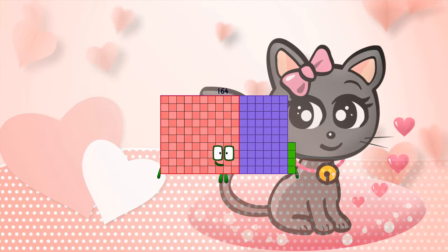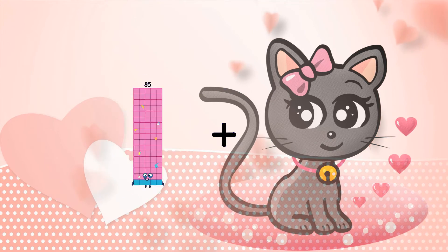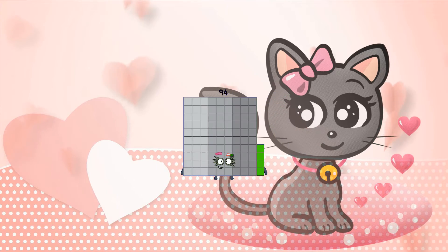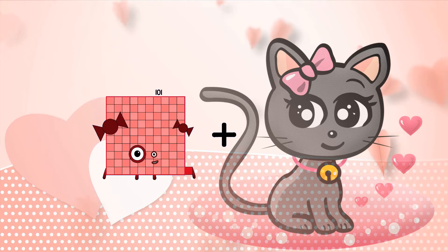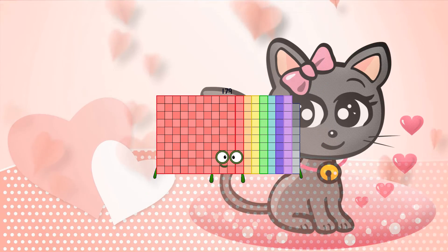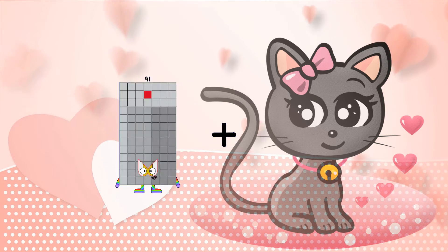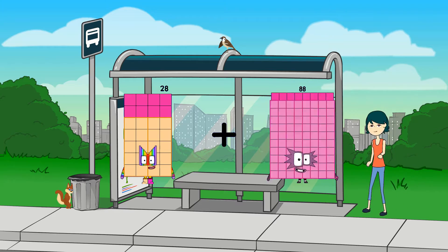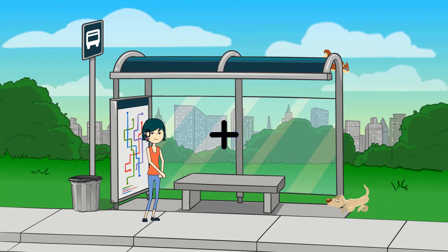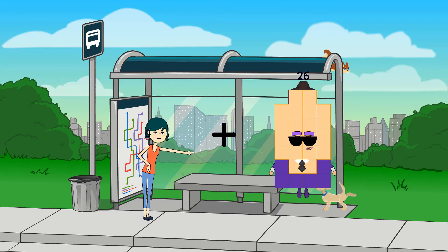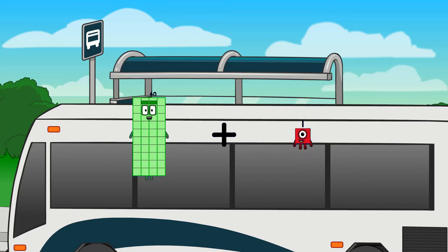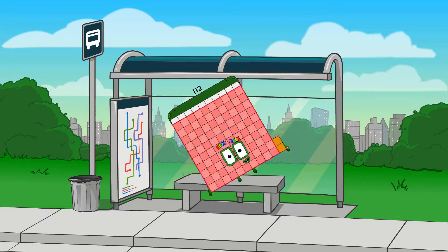102 plus 62 equals 164. 15 plus 79 equals 94. 101 plus 70 equals 179. 40 plus 72 equals 112.